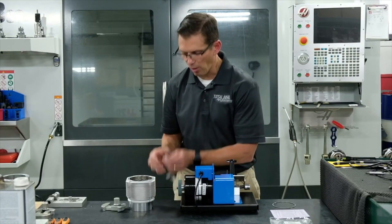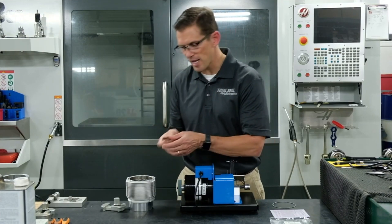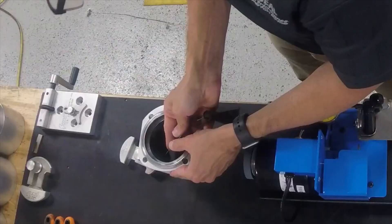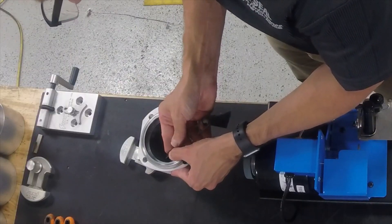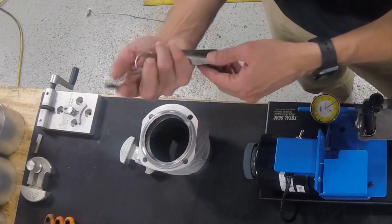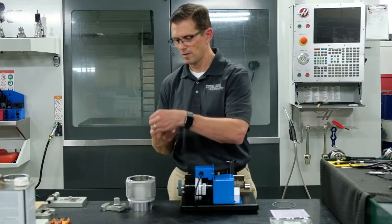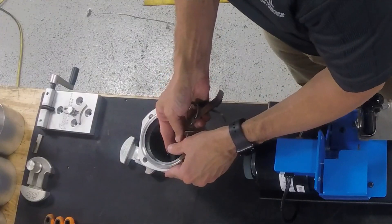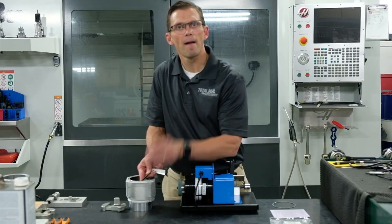Then we're going to use our feeler gauge to see where that ring end gap is. You put it right in that little gap and you press it in, and in this case that one barely wants to go in. So let's try the next size smaller and it goes right in perfectly.